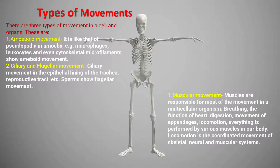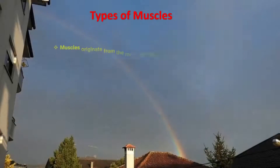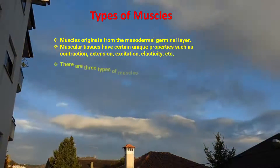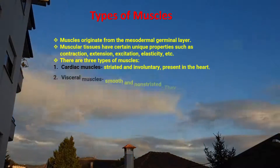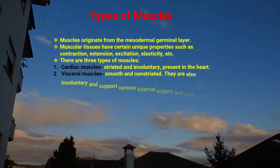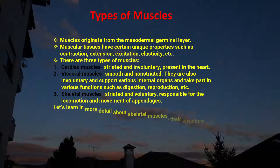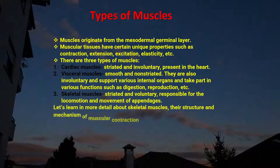Locomotion is the coordinated movement of the skeletal, neural, and muscular systems. Muscles originate from the mesodermal germinal layer. Muscular tissues have certain unique properties such as contraction, extension, excitation, and elasticity. There are three types of muscles.